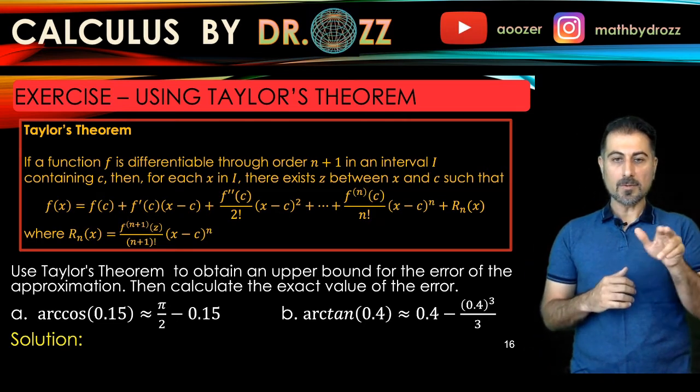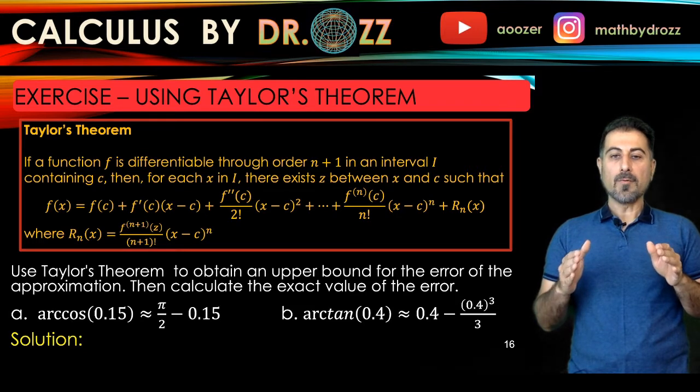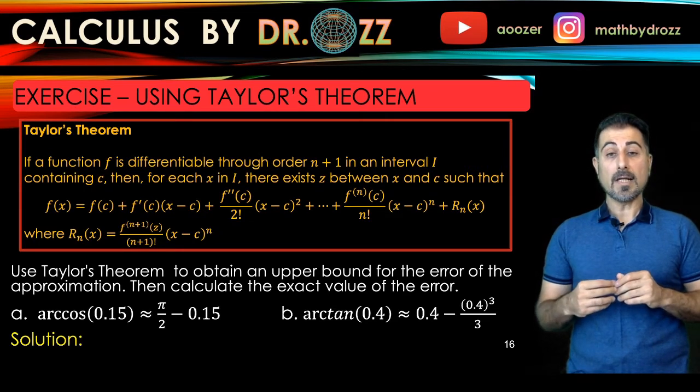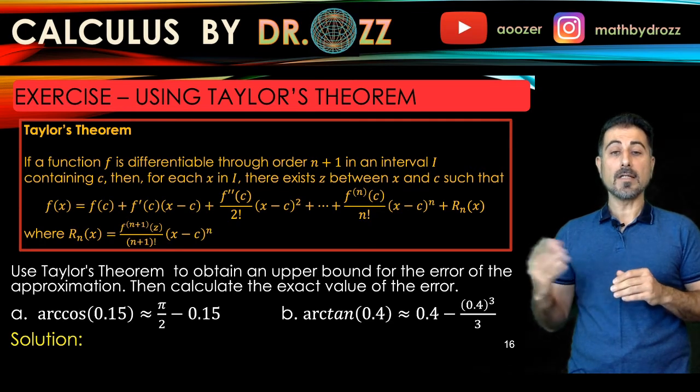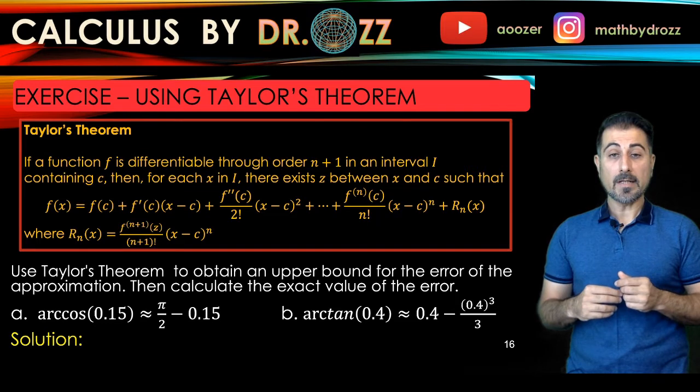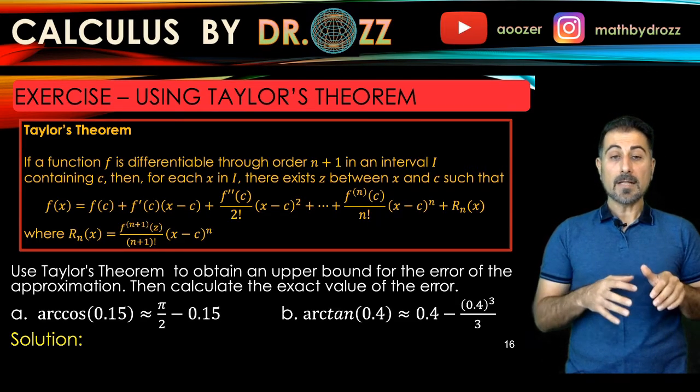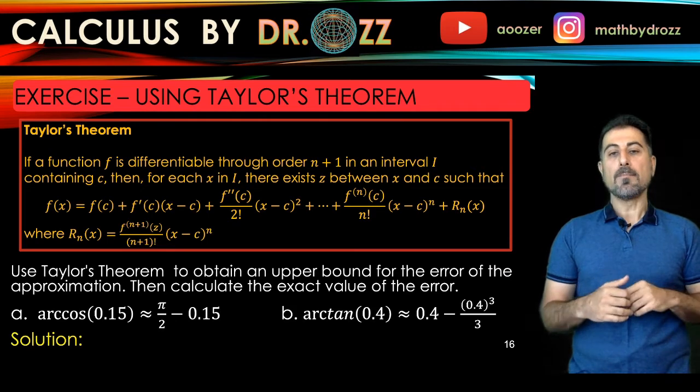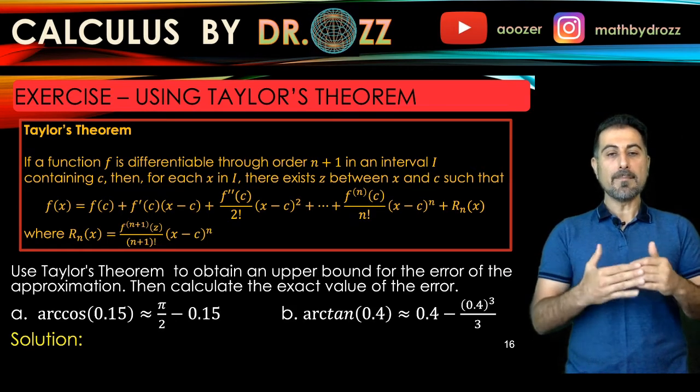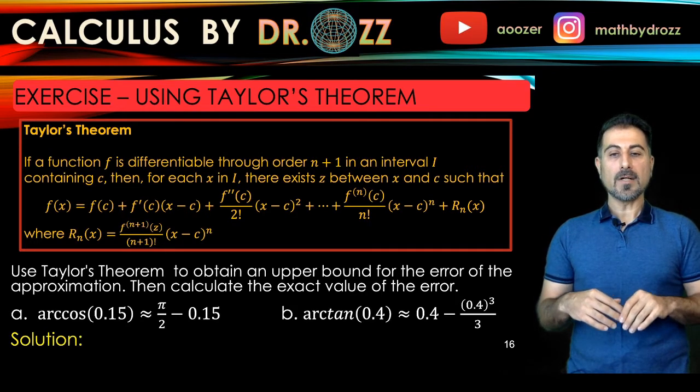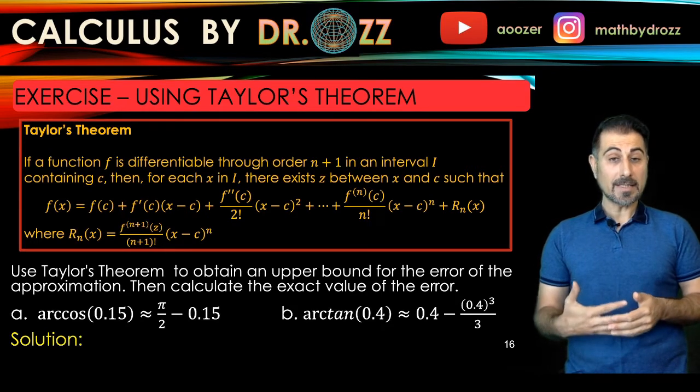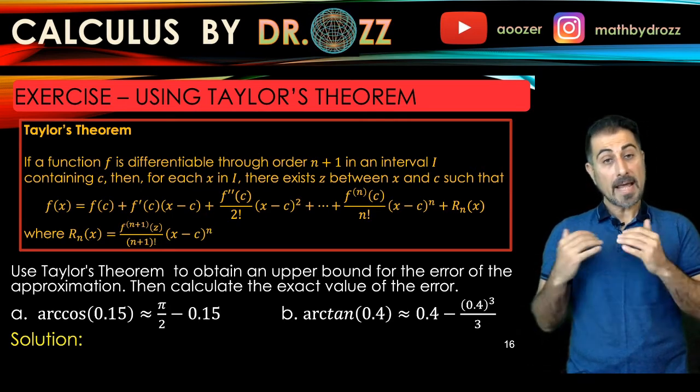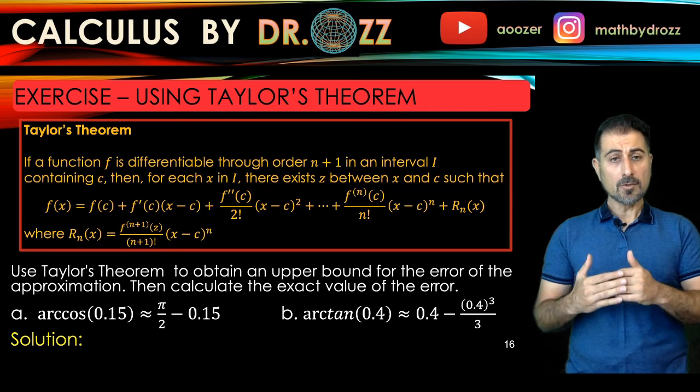What we're going to do in this video is that we're going to try to estimate in the first case arccos(0.15), and in the second case we're gonna make an approximation for arctan(0.4). And we're going to try to find an upper bound for the error of the approximation. So if you replace arccos(0.15) by pi over 2 minus 0.15, what is the maximum error that you make? Because the right-hand side of arccos(0.15) is obtained by the Taylor expansion or Taylor polynomial. So this theorem in general allows us to find an upper bound whenever we use Taylor polynomials to approximate function values.